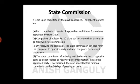The State Commission is set up in each state by the state government. Each commission consists of a president and at least two members appointed by the state government. The president shall be a judge of a high court. Members should be at least 35 years of age and hold a degree from a recognized university.